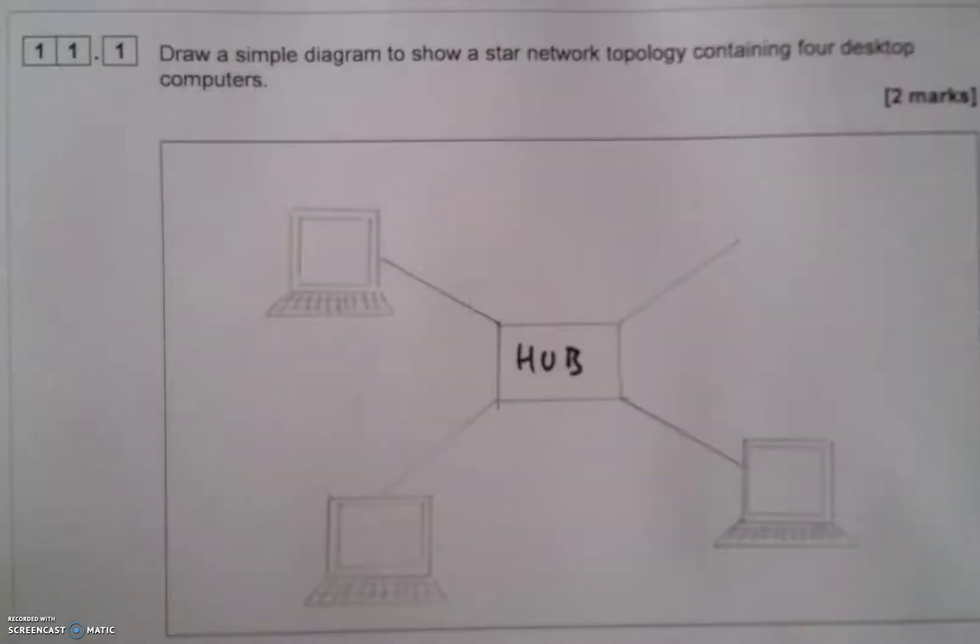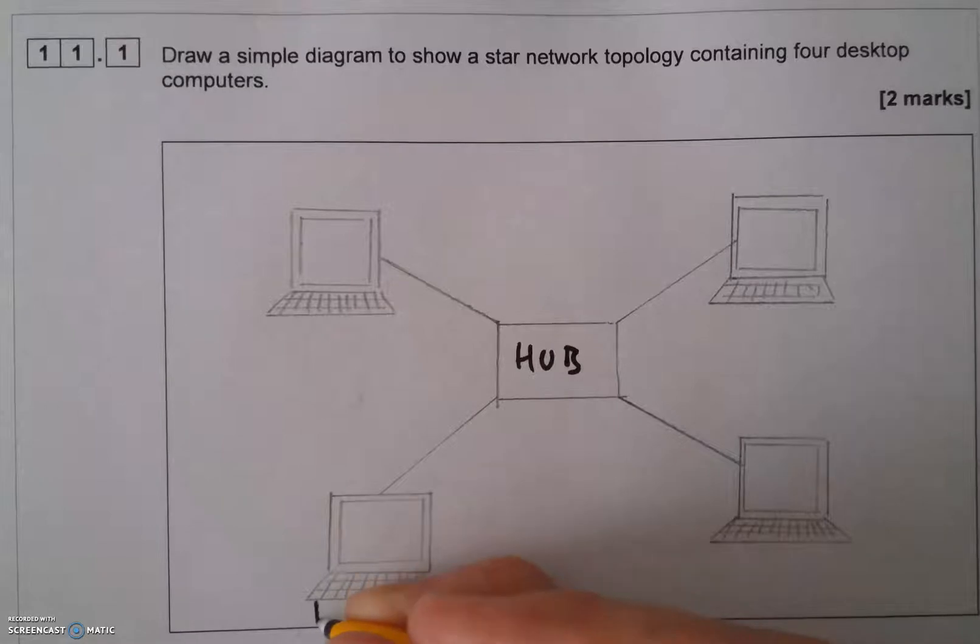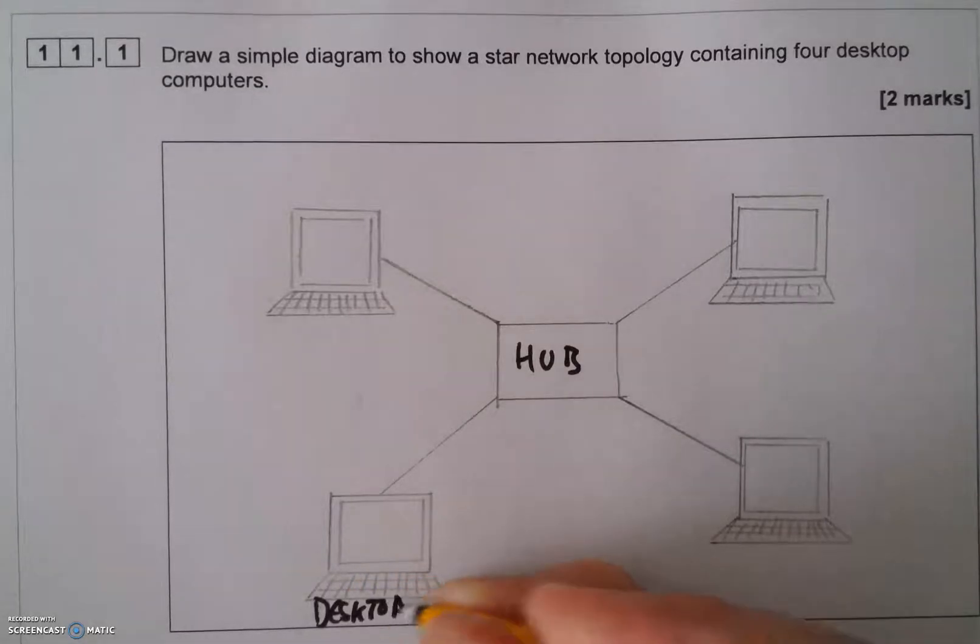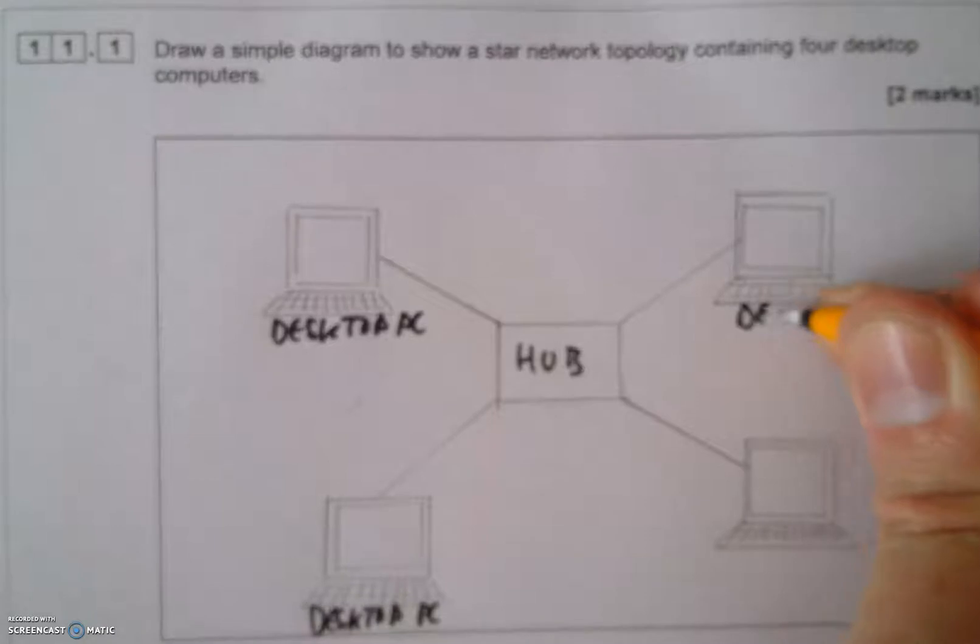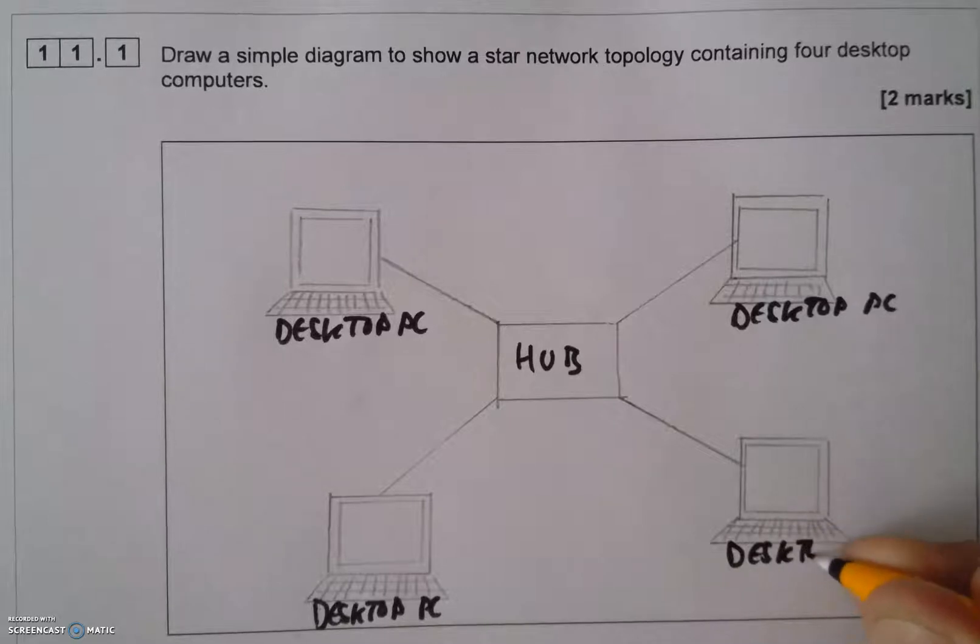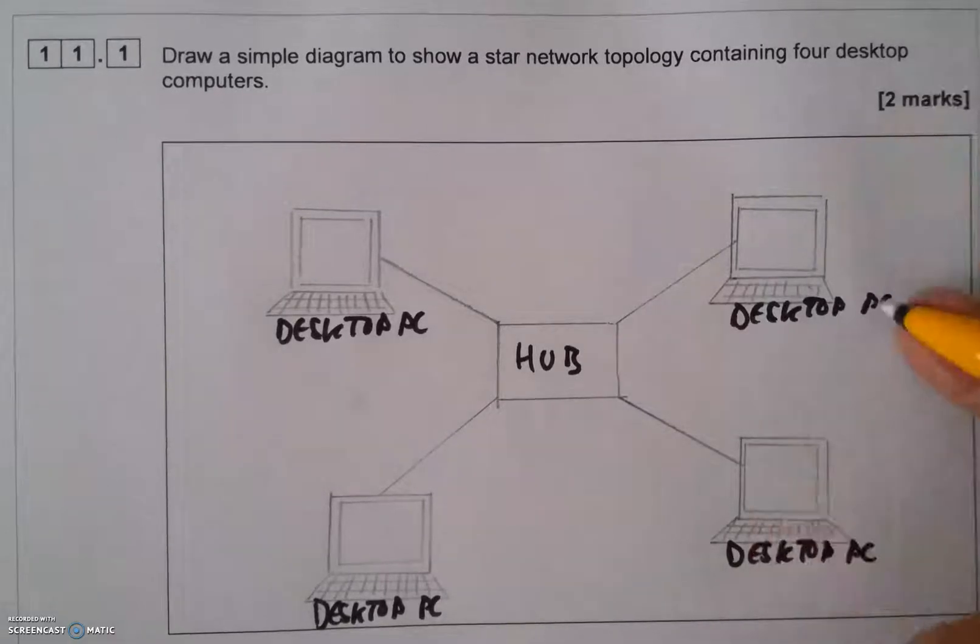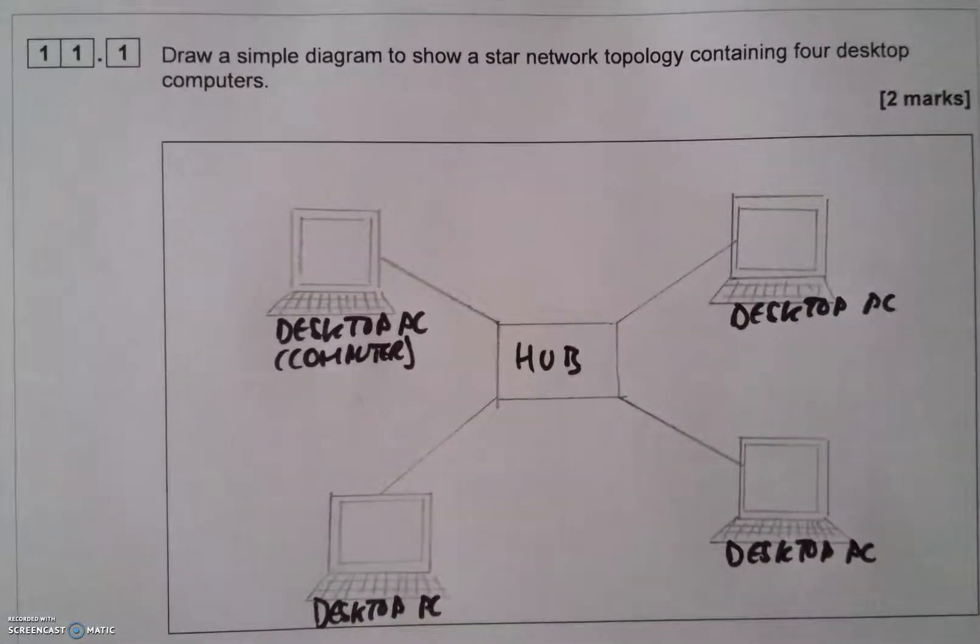There's the third one in place. Now I need to put the fourth one in, and there's the fourth one in place, slightly wonky in the monitor but you get the idea. What I want to do now is label these all four of them desktop PC. The reason for that is you can't spell it out too much to the examiner, just to make that clear.